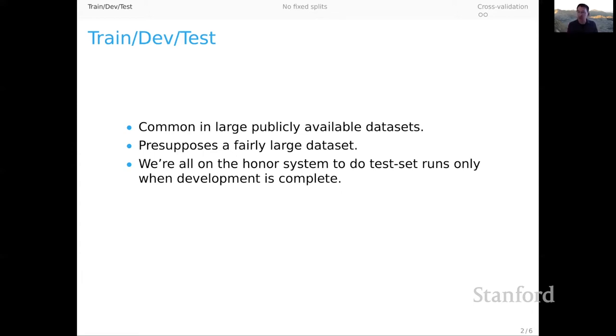And then you do a single evaluation on the test set and report that number completely hands off. This is vital for our field because it's the only way that we can even hope to get a true picture of how our systems are truly generalizing to new examples.